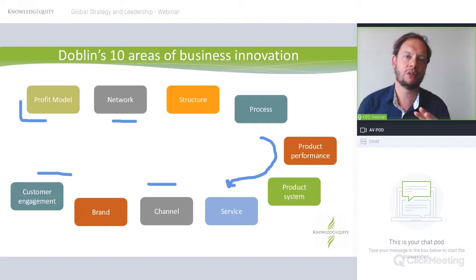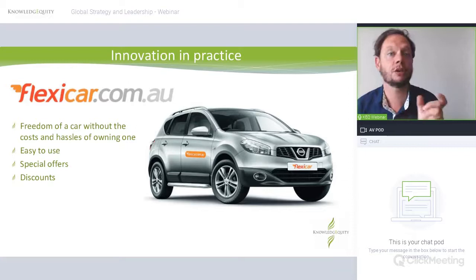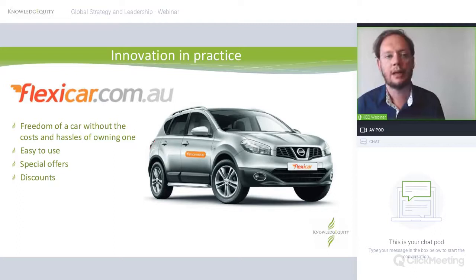The easiest way to look at these is to apply them to a practical example. So I'm going to have a look at FlexiCar — a fairly simple business model: the freedom of a car without the cost and hassles of owning one. This comes under the disruption called access over ownership, similar to the Airbnb model of accessing a property over having to buy a holiday house.